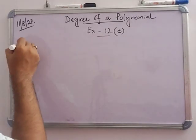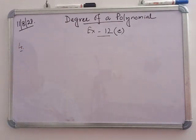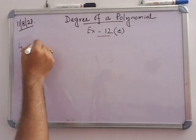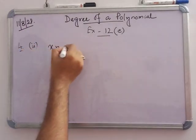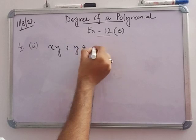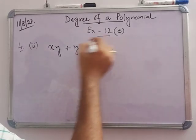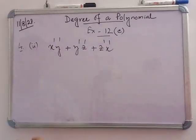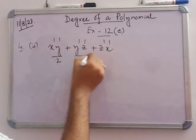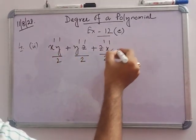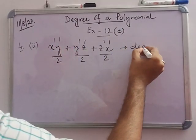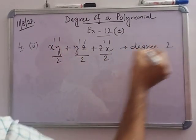In number 4, we have to find the degree of the polynomial. Number 2: xy plus yz plus zx. All the individual powers are 1, and the sum for each term is 1 plus 1 equals 2. So the degree is 2.